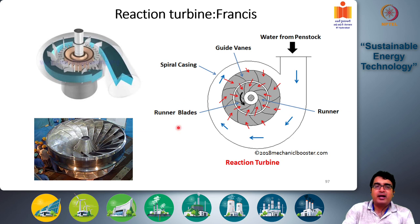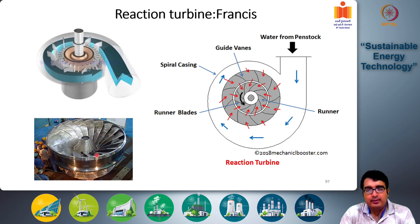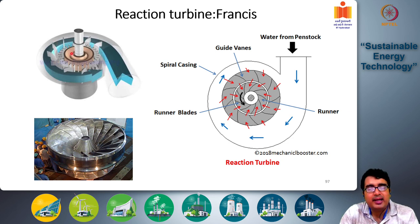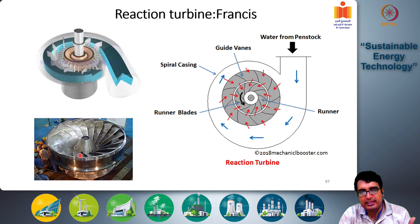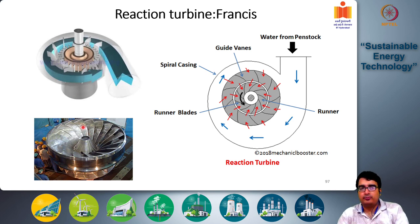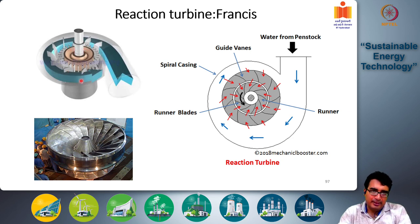This is an example of a Francis turbine — the internal rotor blades are shown here with the shaft visible. You can see how this system works: water flows through the penstock pipe, and then you have two blade structures. The stators are connected to the outer frame of the turbine and direct the flow into the rotor blade system. The water comes in, gets directed by the stators into the rotor blades, transfers its momentum, and then exits at the bottom.